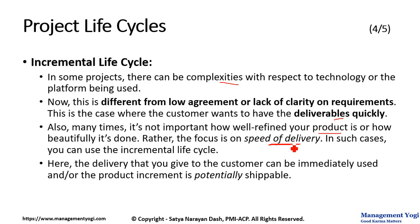Here, the delivery that you give to the customer can be immediately used, and the product increment is potentially shippable. Simply speaking, Iterative Life Cycle is about continuous refinement of requirements — when you have low agreement with respect to the requirements. On the other hand, Incremental Life Cycle is about speed of delivery — how fast you can deliver to the customer. You can also say Iterative Life Cycle is about the correctness of solution, while Incremental Life Cycle is about the fastness of solution — how fast you are delivering, because you have to deliver quickly.